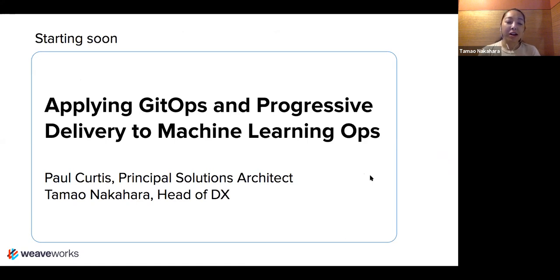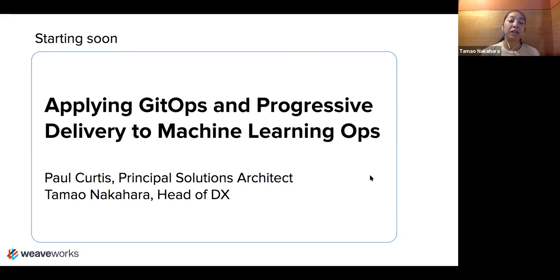Hello, my name is Tamo Nakahara. I run the developer experience team at a company called Weaveworks. We are very lucky today to have Paul Curtis, who's a solutions architect also at Weaveworks, and he'll be talking about machine learning ops, MLOps, and how you might apply GitOps and the concepts like Canary, Blue-Green, and A/B testing, which has now become under the umbrella term progressive delivery, and how you can apply these concepts to machine learning ops.